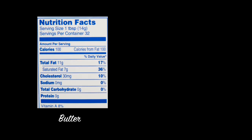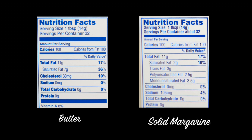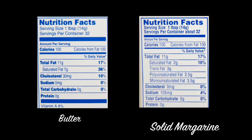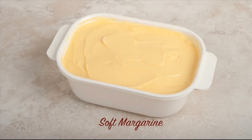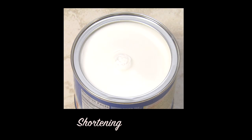Butter and regular margarine have the same number of calories and total fat. Saturated fat is significantly higher in butter. Although margarine is lower in saturated fat, it's a major source of trans fat for home cooking. Soft margarine suitable for cooking sold in the United States is another major source of trans fat. One option for reducing trans fat and saturated fat is to use shortening, which is 100% fat.